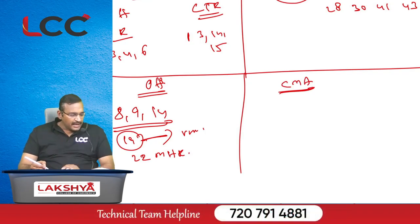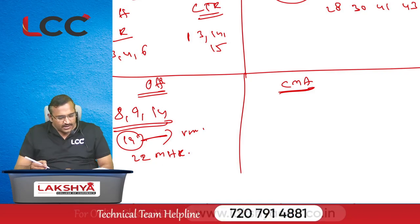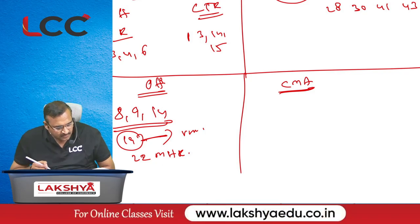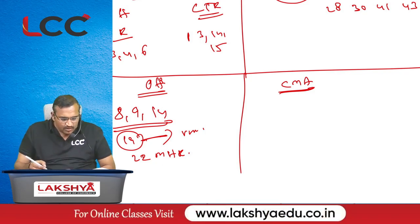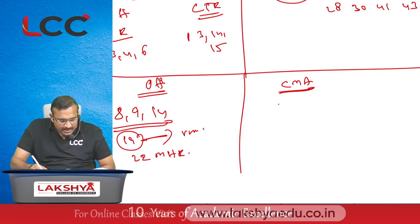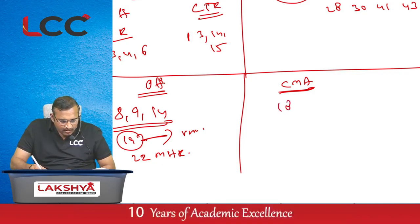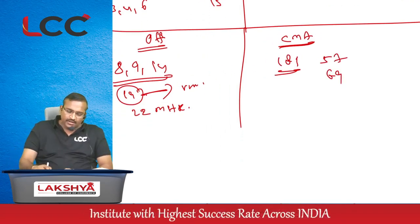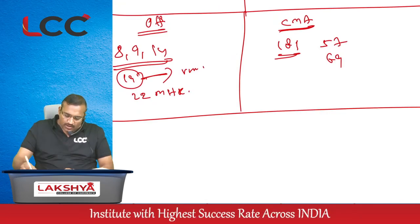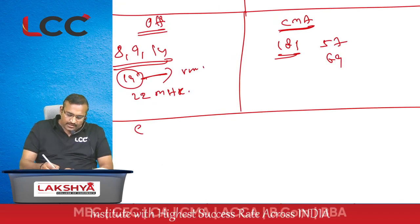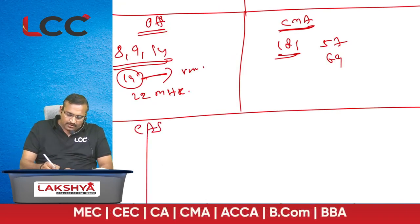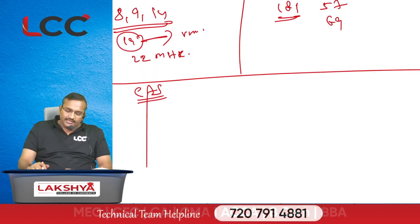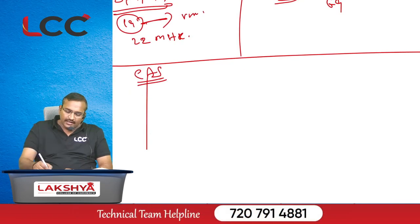From the CMA material, overhead-related questions are on page number 181: questions 57 and 69. The next chapter is the cost accounting system, which deals with the integrated system and non-integrated system.